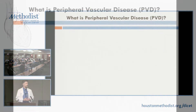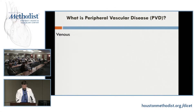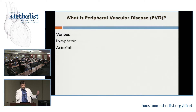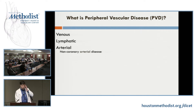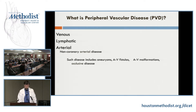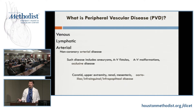What is peripheral vascular disease? It's more than you think. Peripheral vascular disease is really venous, lymphatic, and arterial disease — a very broad diagnostic category. Today we're going to be talking about a non-coronary arterial disease. Non-coronary arterial disease also includes aneurysms, AV fistulas, AV malformations, and occlusive arterial disease. Our focus today will be arterial occlusive disease.